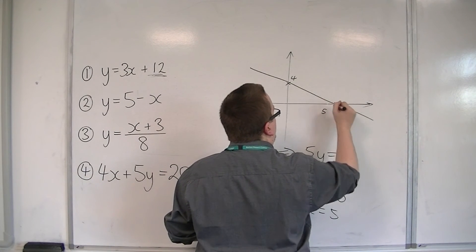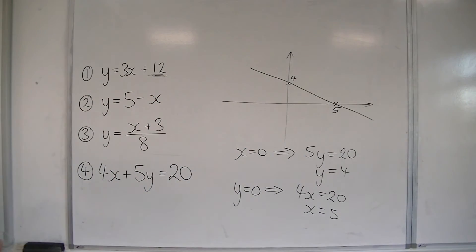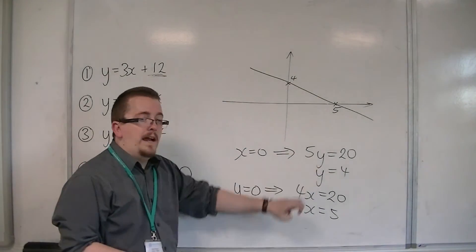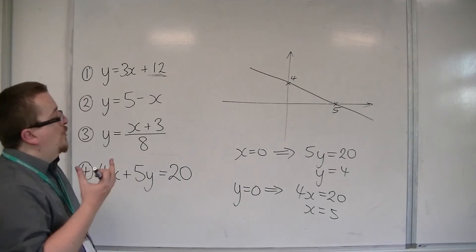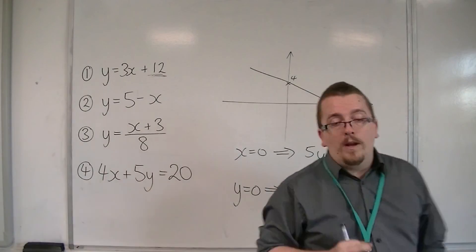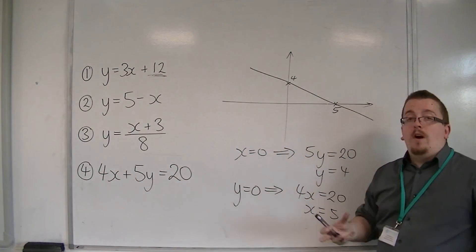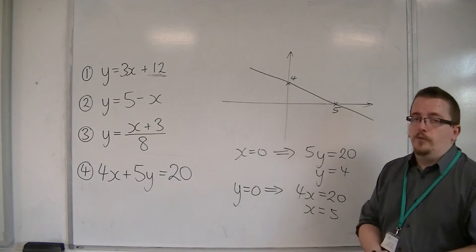So the line is going through those two points, and that's how we can calculate them. Put x is 0 and y is 0. You can do this for any straight line equation. Put x is 0, then y is 0. Solve the equation that's left, and that will tell you the two coordinates that it goes through.